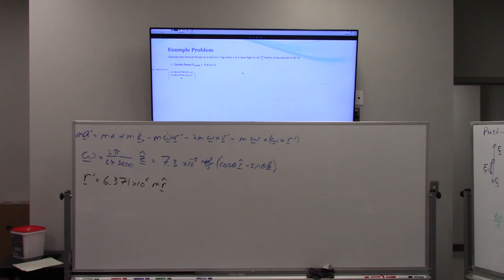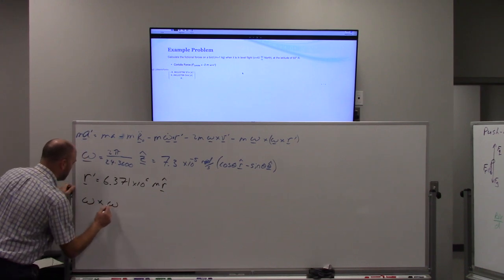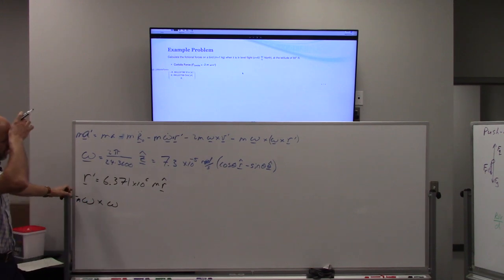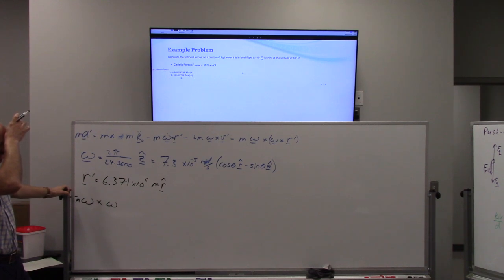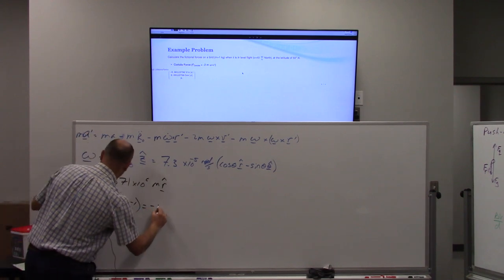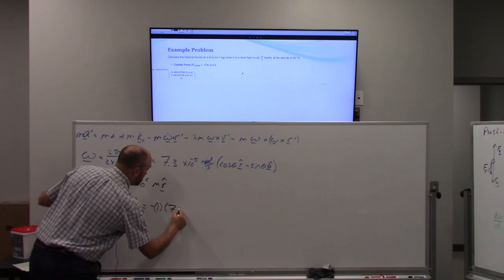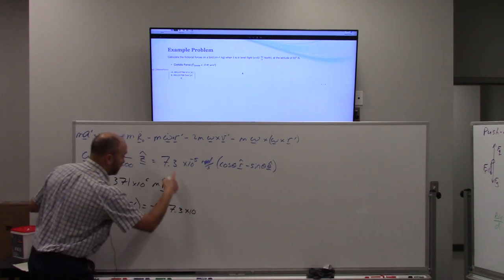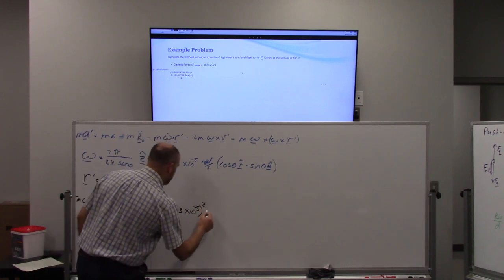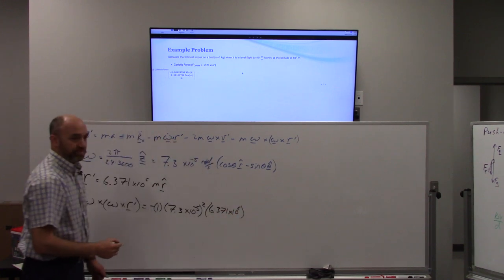Well, omega cross omega cross r. And everything's already in spherical coordinates. We just start crossing. I'm going to group all the numbers up front.